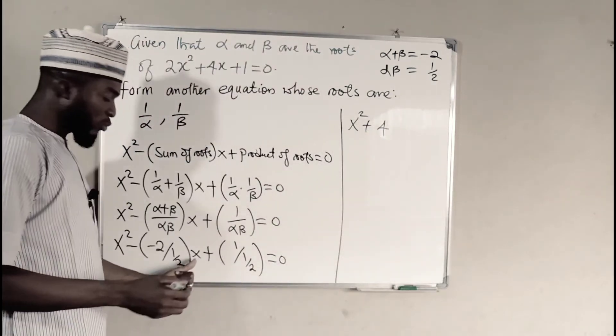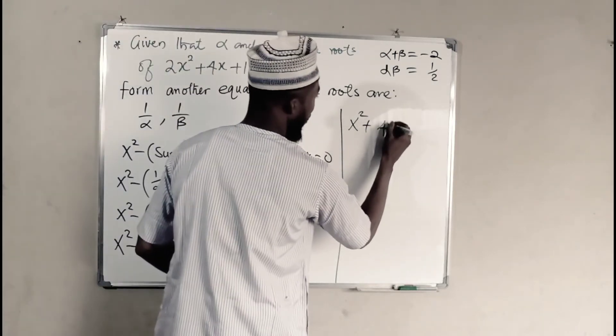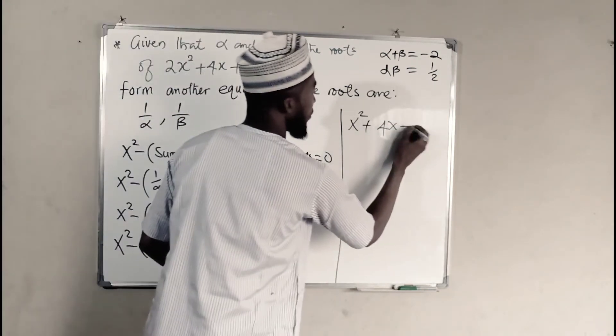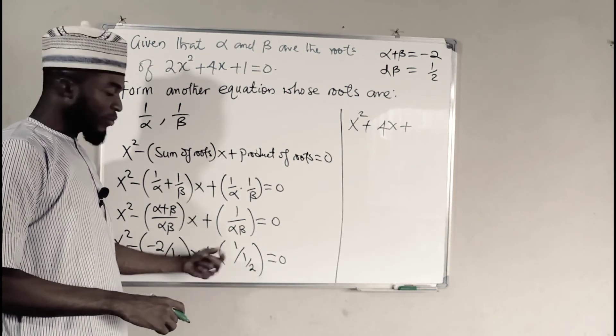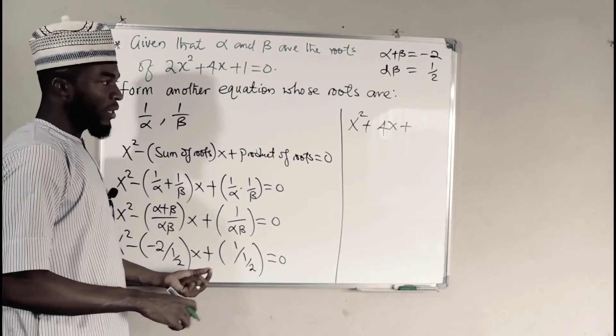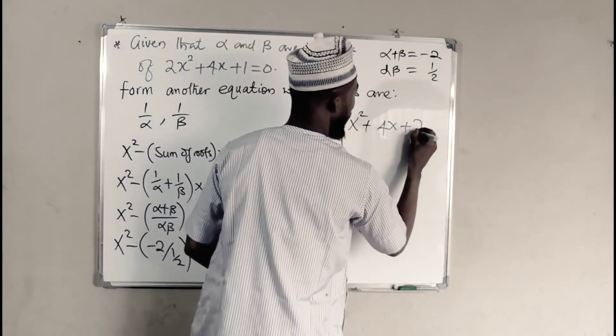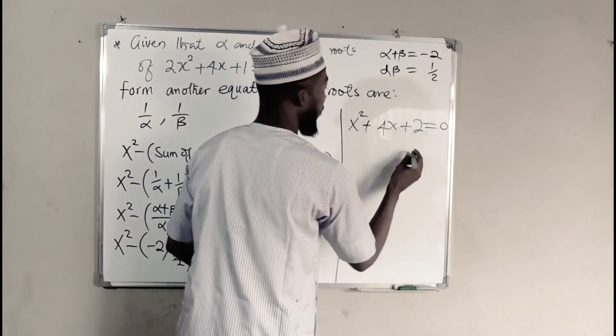And the 4 is going to multiply x. So we have x here. Then plus 1 over 1 over 2 is like taking the reciprocal of this 1 over 2, and it becomes 2. And all of this equal to 0.